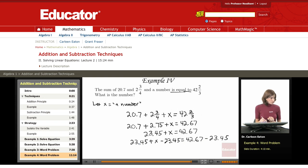The 23.45's cancel out on the left, so I have x. And if I subtract 42.67 minus 23.45, it actually comes out to x equals 19.22.